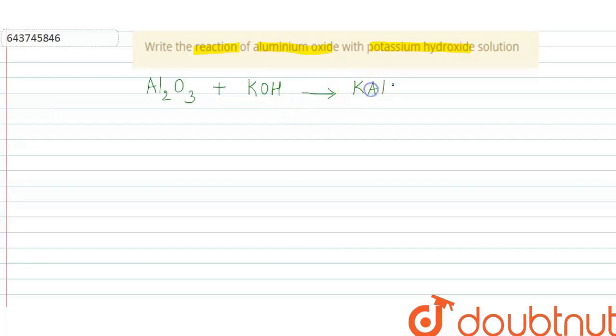potassium aluminate, that is KAlO₂, potassium aluminate the salt, and water. The balanced reaction is